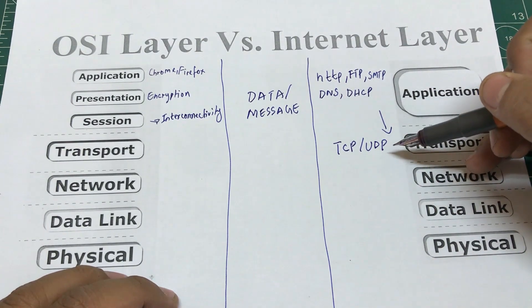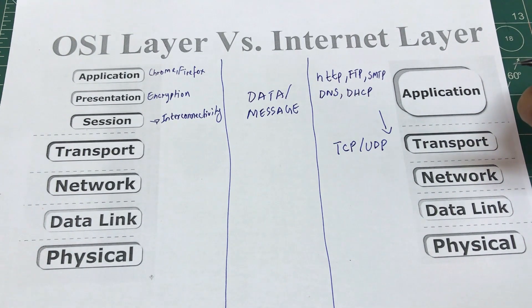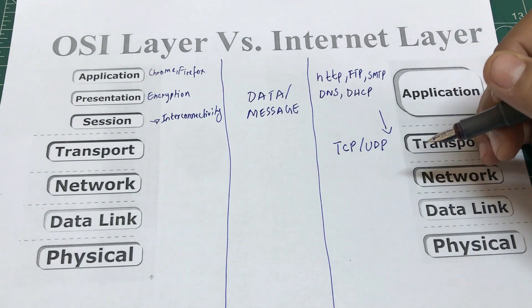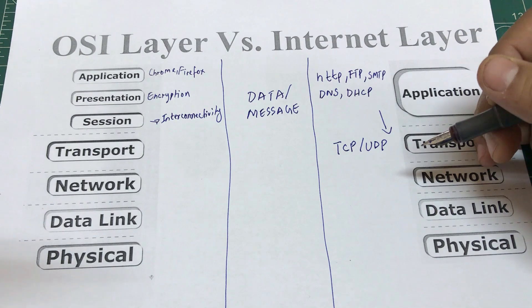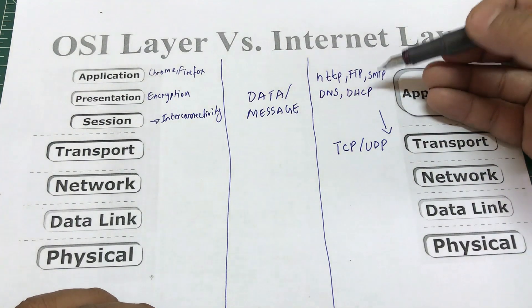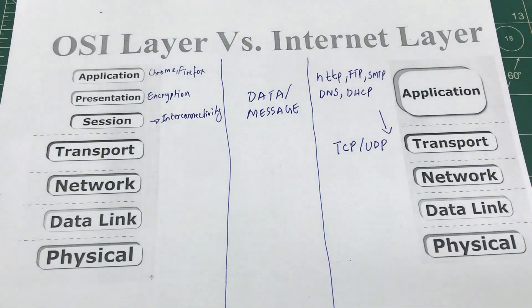Another service that uses UDP is streaming websites. When you're streaming a video, a game, or a football match, you don't care about retransmission. If there's an error in the bits, you might get a brief jitter in your video, which you can easily tolerate. But with emails and other services, you cannot tolerate errors, so UDP is used for streaming platforms.